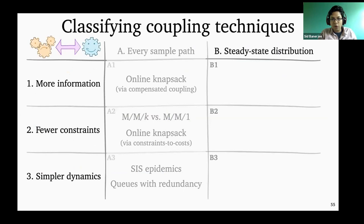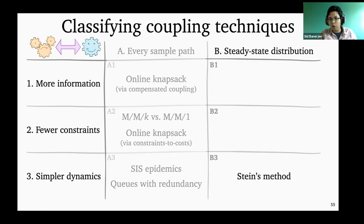So that was Stein's method. It's clear that Stein's method falls in the set of simpler dynamics — in fact, we are not even simplifying the dynamics, we are simplifying the end goal of the dynamics: the steady state distribution that comes about as a result. So now we still have two boxes left.